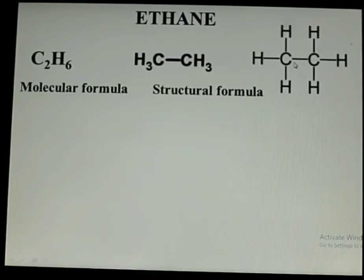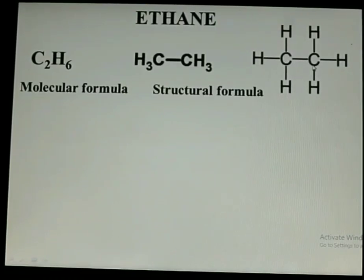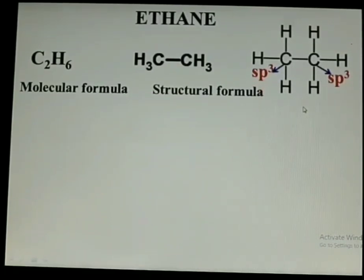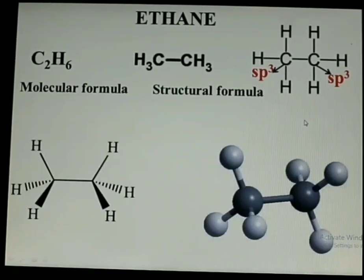These are still structural formulas, because here also you have to think about the hybridization of the carbon atoms. Both carbon atoms in ethane are saturated — only single bonds are present — so definitely these two carbon atoms are in sp3 hybridization. If you want to represent ethane in its perfect manner, you should represent the geometry of these two carbon atoms, meaning the geometry of the whole molecule. Ethane exists in a tetrahedral shape; both carbon atoms will be in tetrahedral shape.